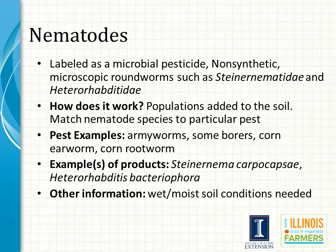Nematodes are non-synthetic microscopic ground worms within the Steinernematidae and Heterorhabditidae families. Populations are applied with water onto the soil. Because of that, these nematodes are only effective on pests that begin their life cycle in the soil or those that overwinter in the soil early on in the spring. Pests that have been controlled with nematodes include armyworms, borers, corn earworm, and corn rootworm. Examples of products used to control these include Steinernema carpocapsae and Heterorhabditis bacteriophora. Vital information for using nematodes is that they require wet and moist soil conditions in order to move within the soil profile.